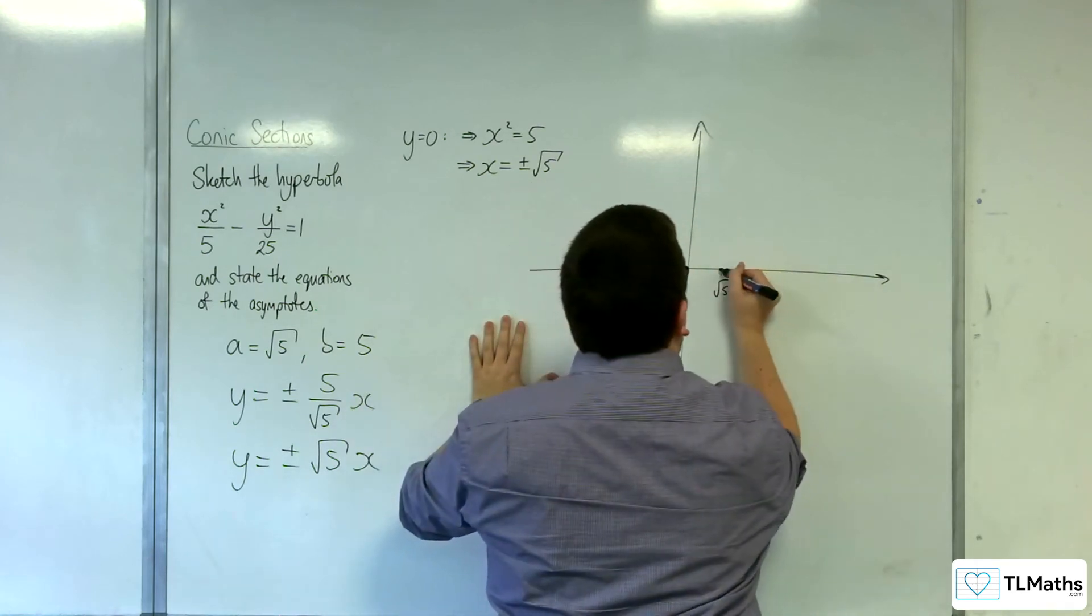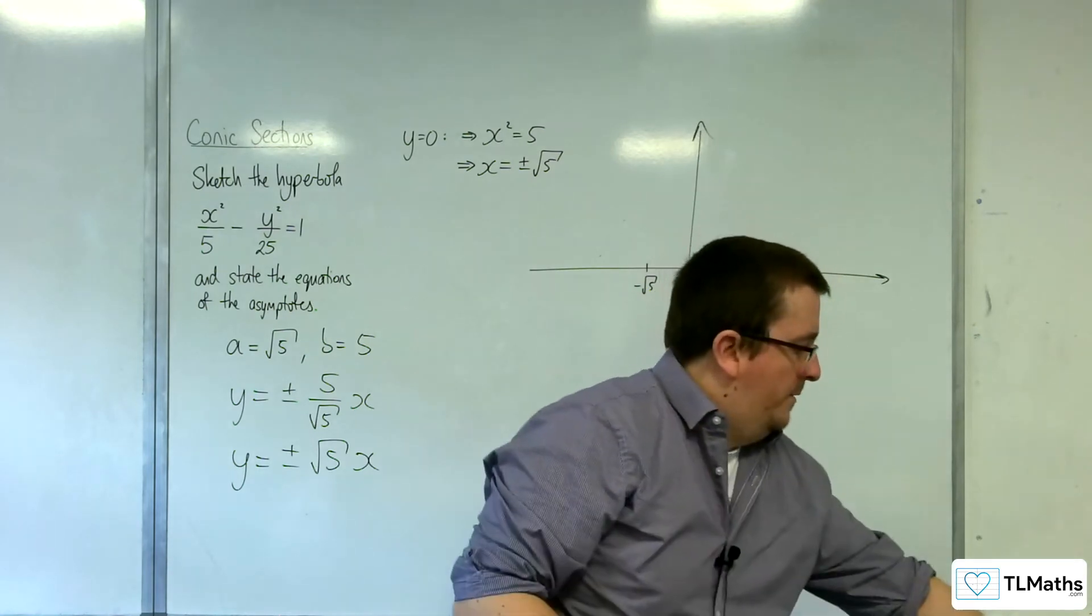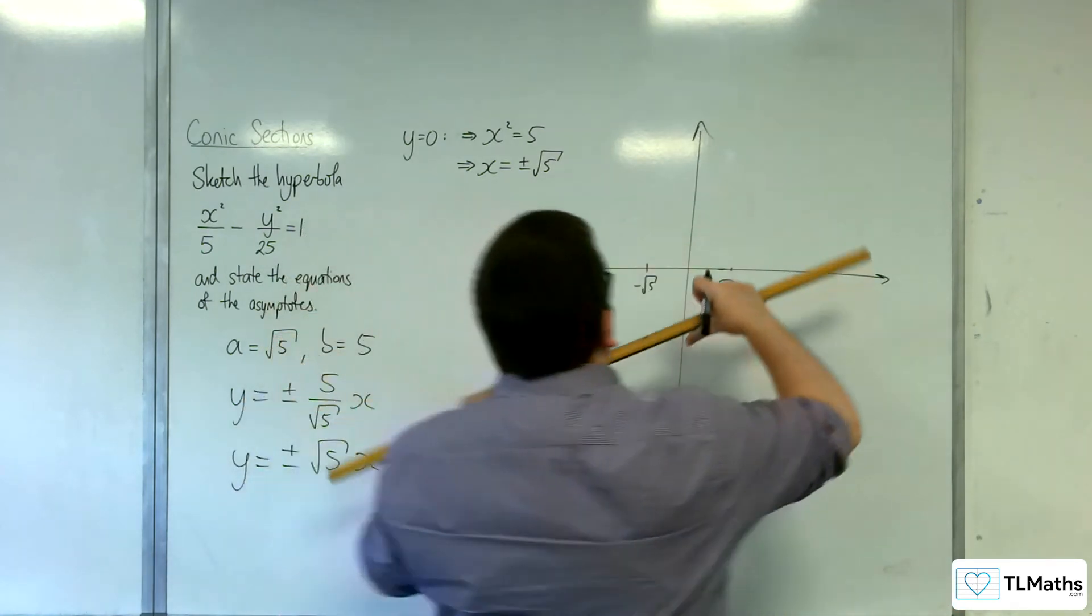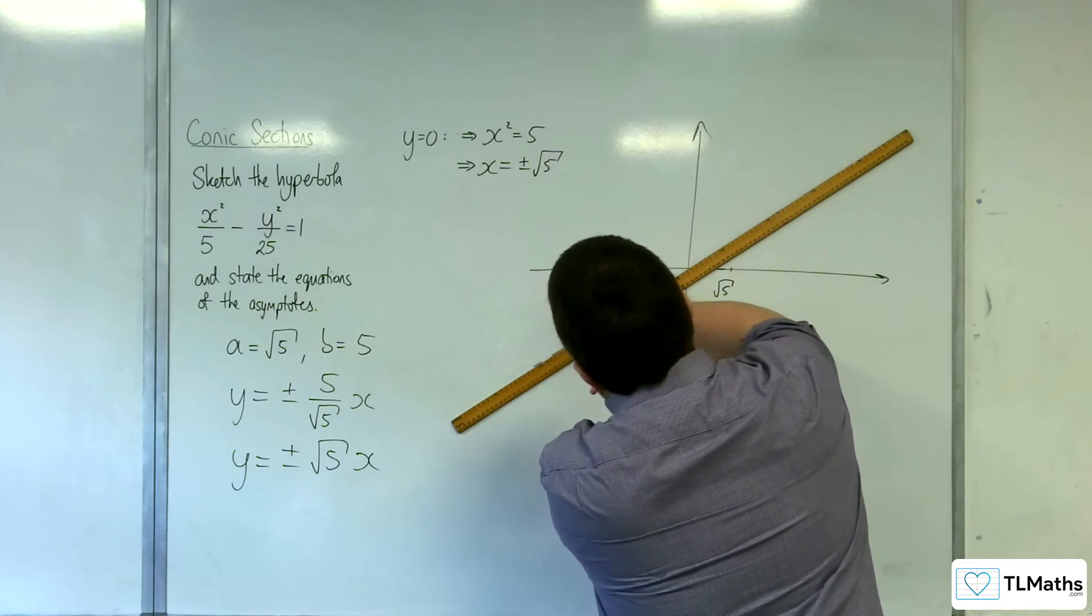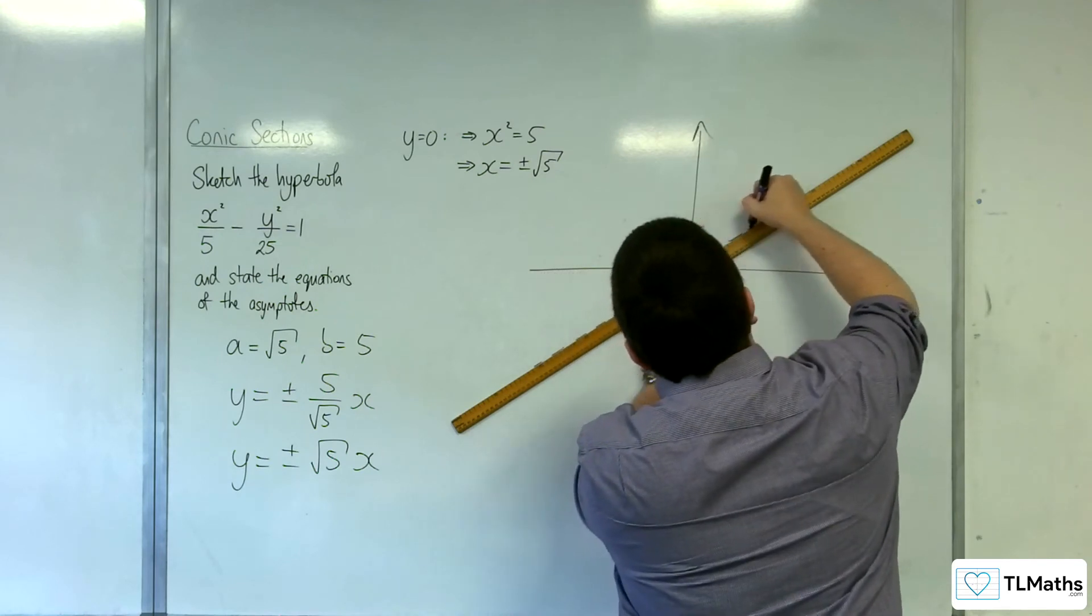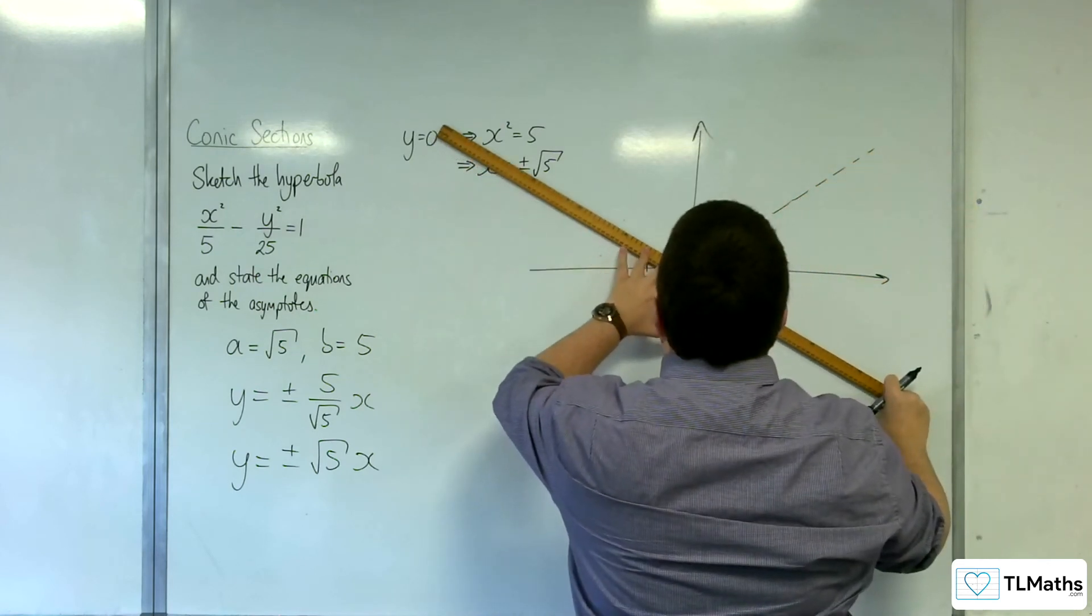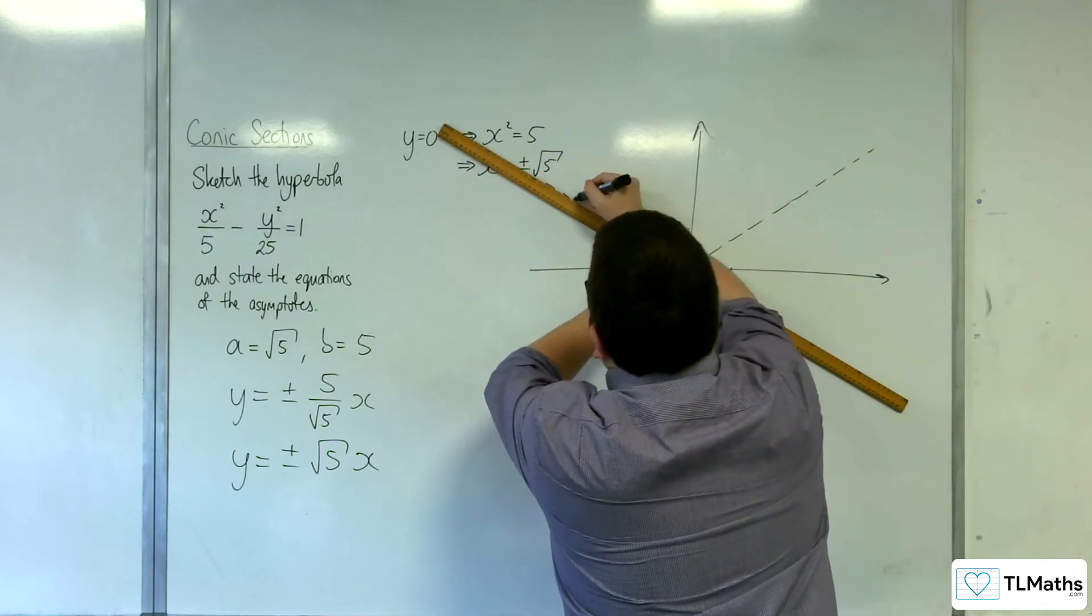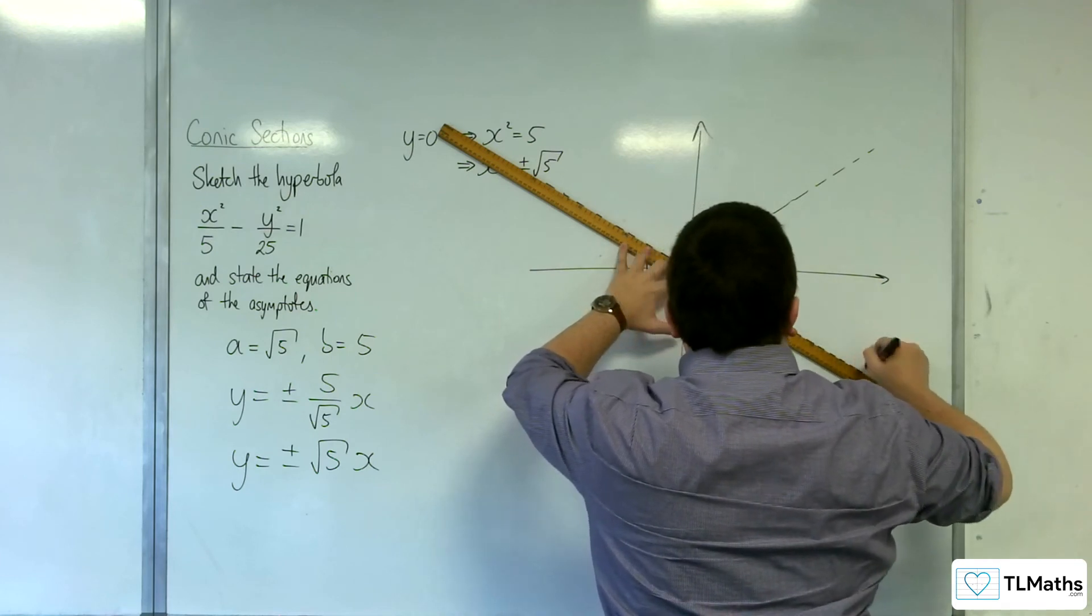Right, then draw some asymptotes. So one of that one, and that one.